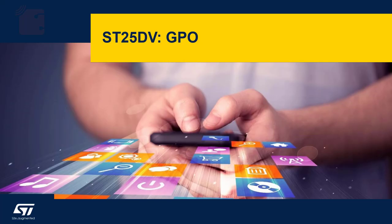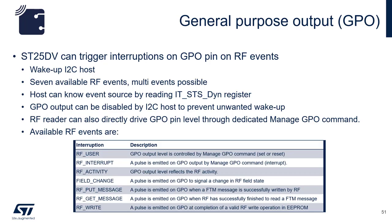Next we are going to look at the GPO. The GPO is used to wake up I2C hosts. Seven RF events can be gated. The microcontroller determines what type of event was triggered by reading the ITSTS dynamic register. You can also disable the GPO output via the microcontroller to prevent unwanted wake-ups. The RF reader can also drive the GPO pin level directly.